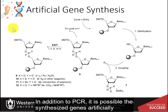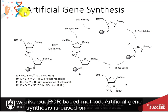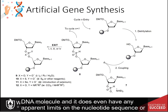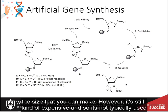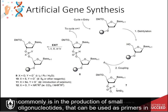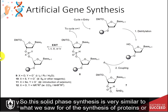In addition to PCR, it is possible to synthesize genes artificially — sometimes known as DNA printing — and it doesn't require a template like the PCR-based method. Artificial gene synthesis is based on solid-phase DNA synthesis, and it's possible to make a completely synthetic double-stranded DNA molecule with no apparent limits on nucleotide sequence or size. However, it's still somewhat expensive, so it's not typically used if PCR can generate the product. Where it comes into play most commonly is in the production of small oligonucleotides used as primers in PCR reactions — usually short, single-stranded DNA molecules.